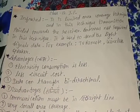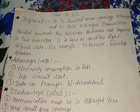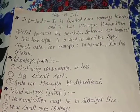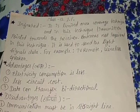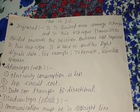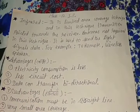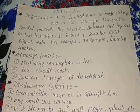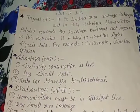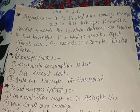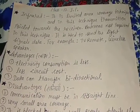Now let's talk about the advantages of infrared rays. First, electricity consumption is very low. You can see that the remote runs on a small cell or battery — you don't need to charge it frequently like a charger. Second, the circuit cost is very low. The remote circuit is very simple — just metal plates, buttons, signals, and circuits — so the cost is also very low.